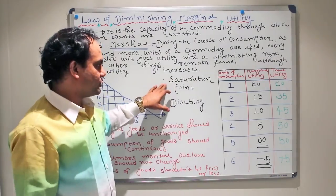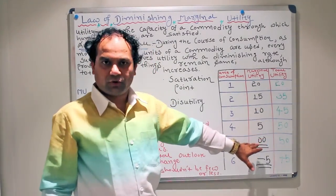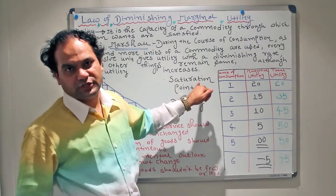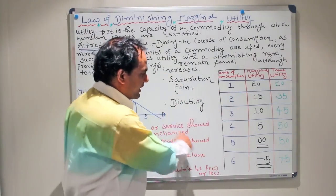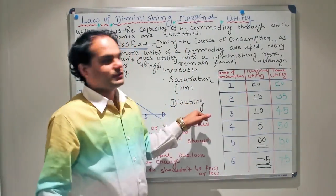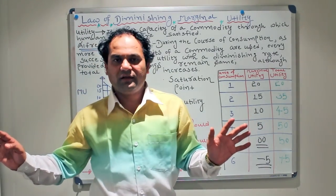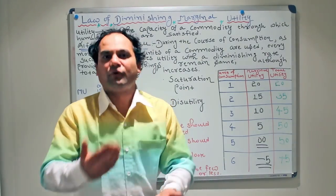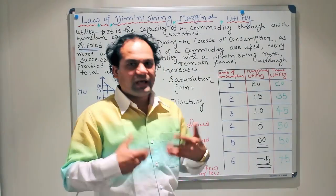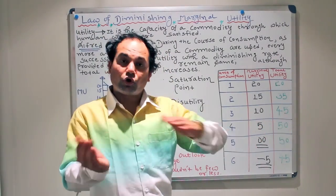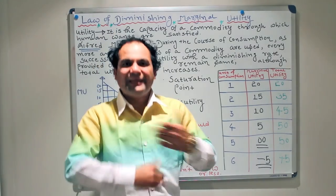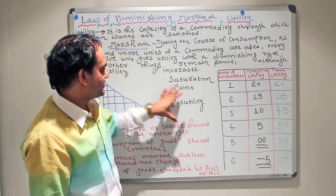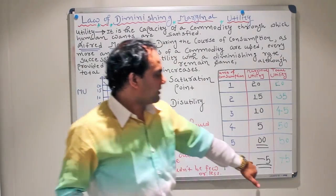Two very important points to keep in mind: saturation point and disutility. The saturation point is when marginal utility becomes zero — you have had enough of that particular good, service, or product. Disutility is when the marginal utility turns out to be minus — you are not getting anything from that product anymore. On top of that, you feel as if something is being taken away from you; you don't want to have that product anymore and you feel like you are paying something additionally rather than gaining.